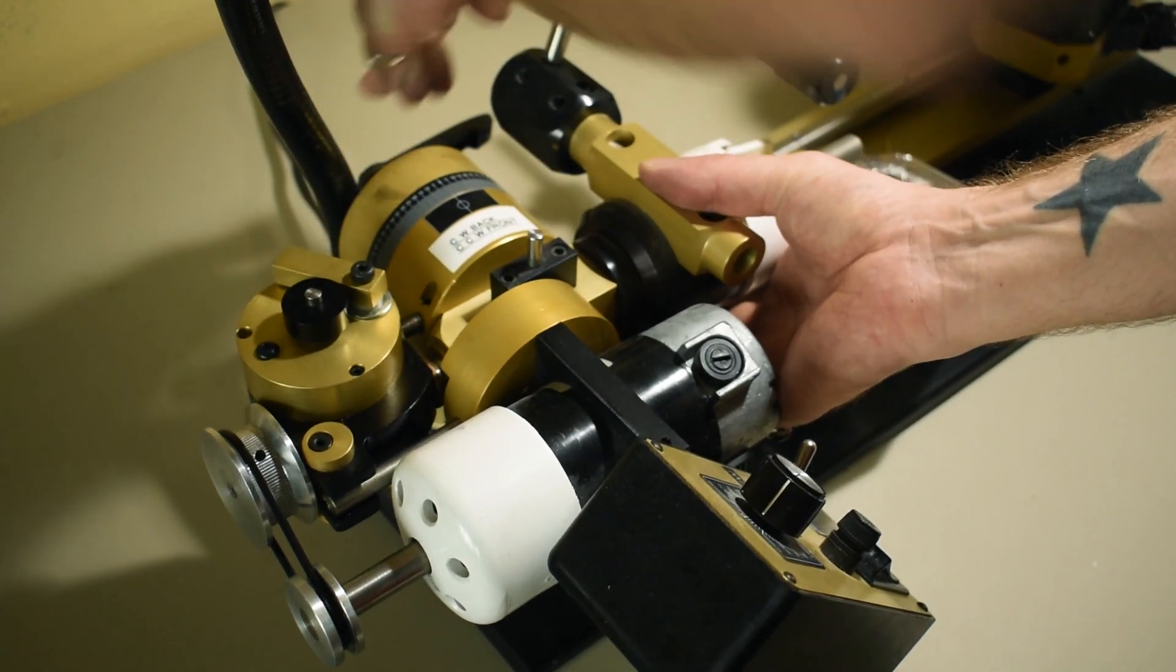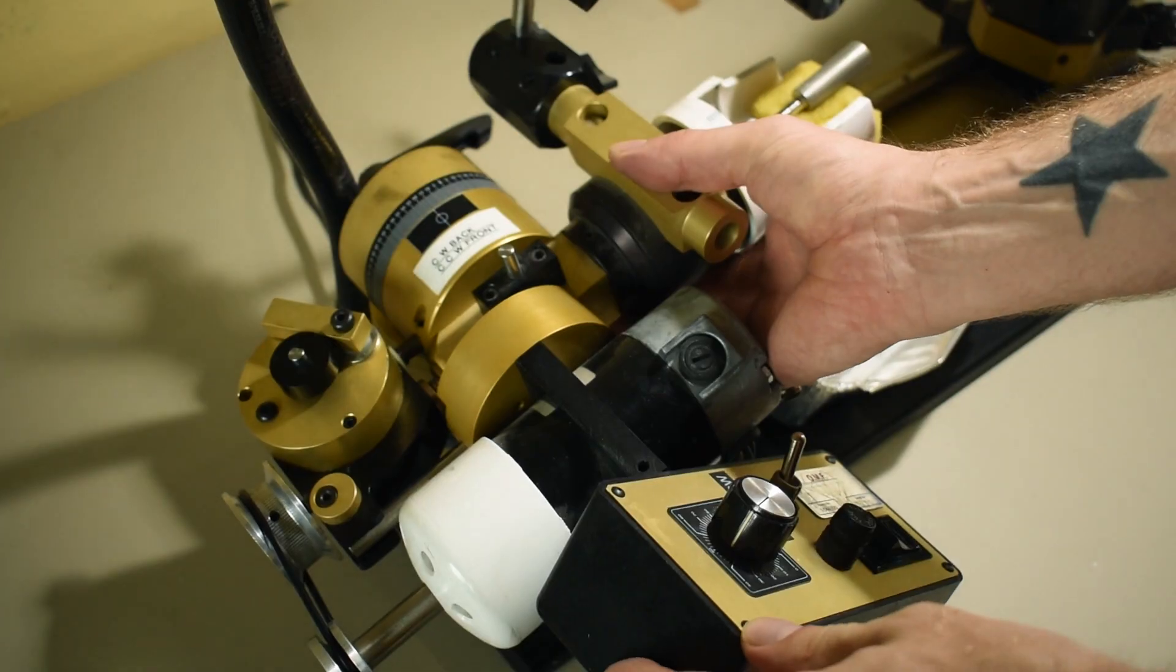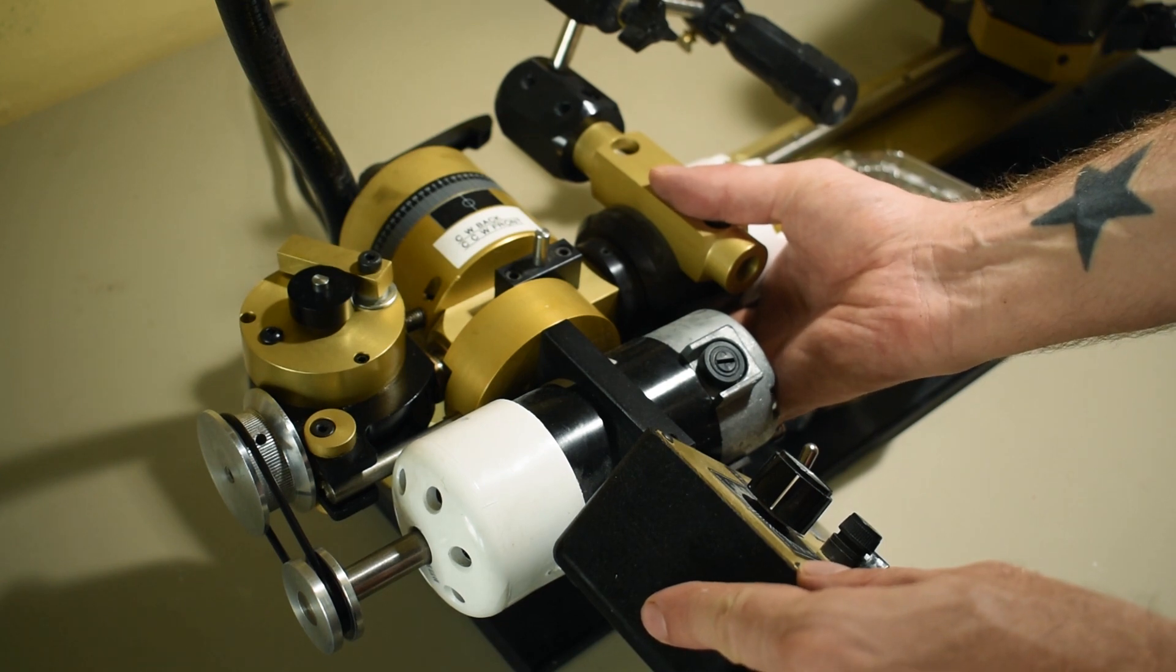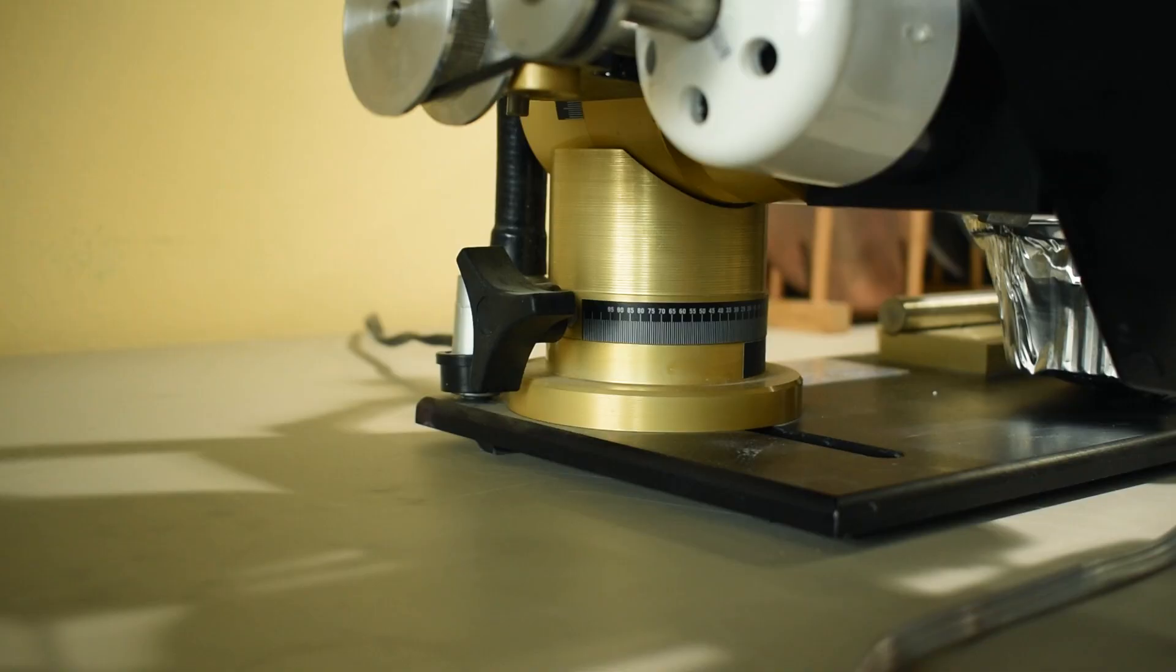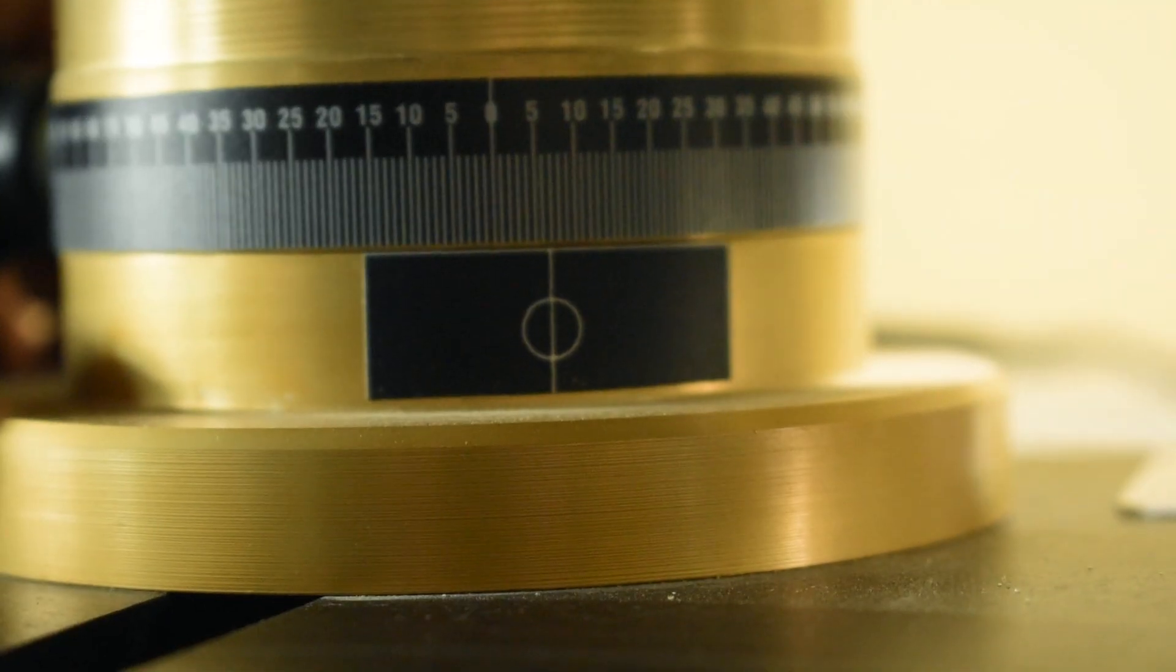The OMF can rotate and pivot allowing you to get exactly the angle you're looking for. A curved facet causes light to reflect differently inside the gemstone than a flat facet, letting you get very experimental and creative in your cutting to create stones with built-in optical illusions.